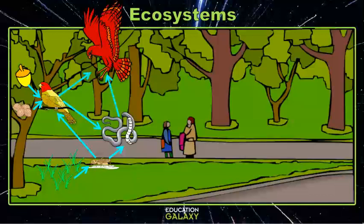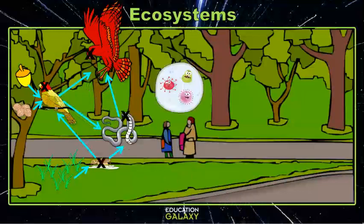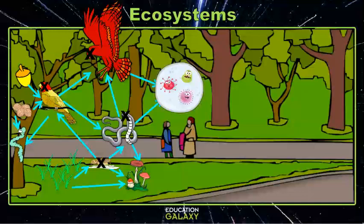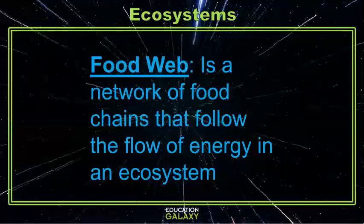Usually, food webs don't include decomposers, but let's draw them in on ours as well. Let's say all of our animals die. Decomposers like bacteria, worms, and fungi would then eat all of those organisms and decompose them. This would be an example of a more complete food web. A food web is just a network of food chains that follow the flow of energy in an ecosystem.